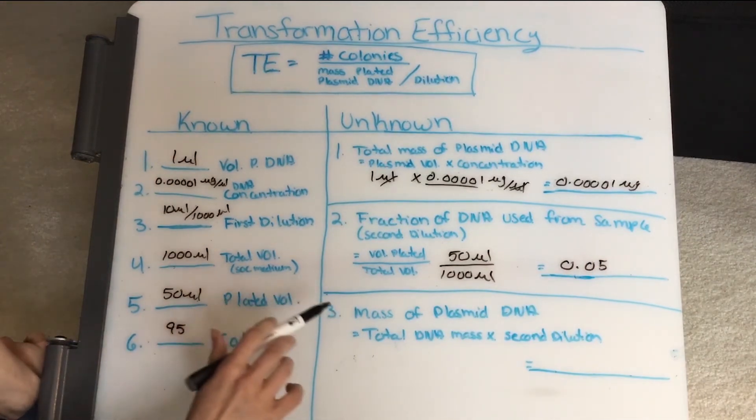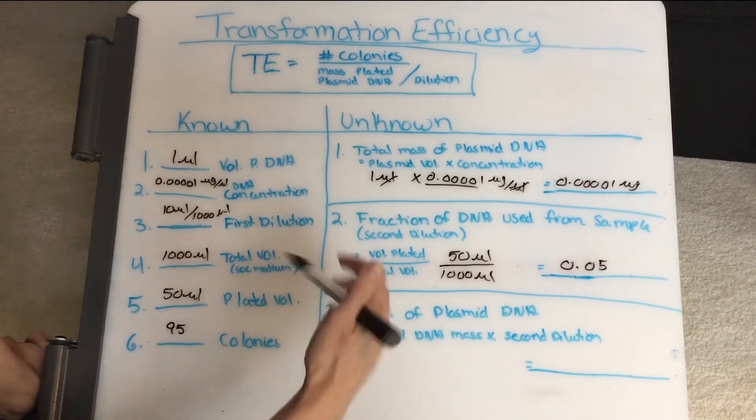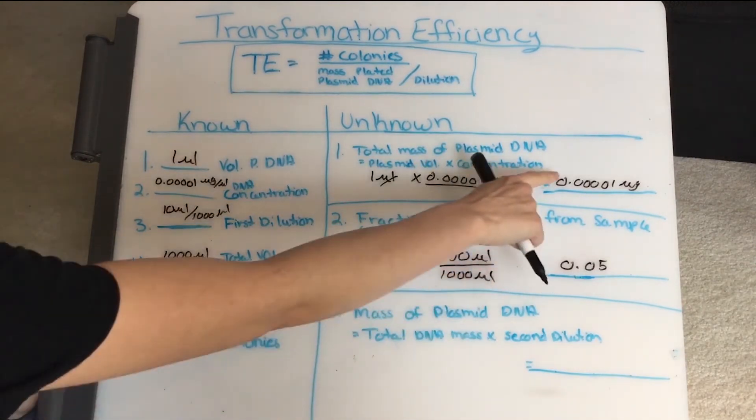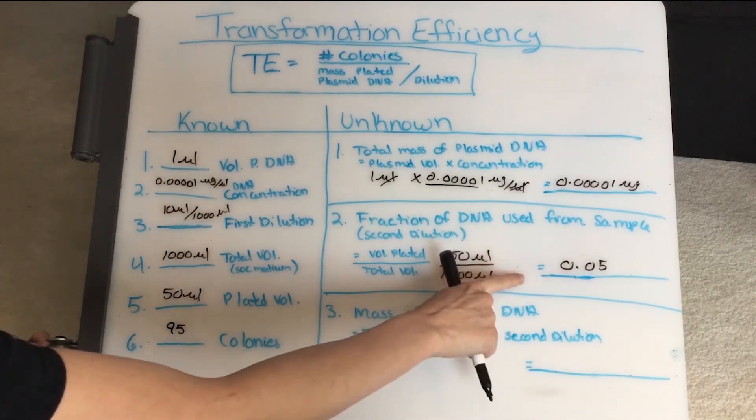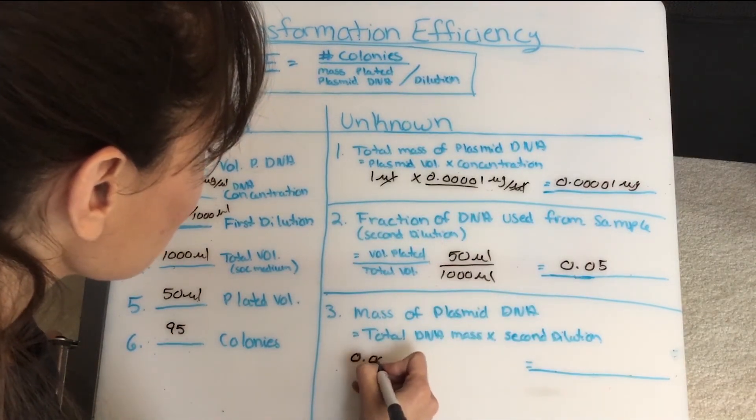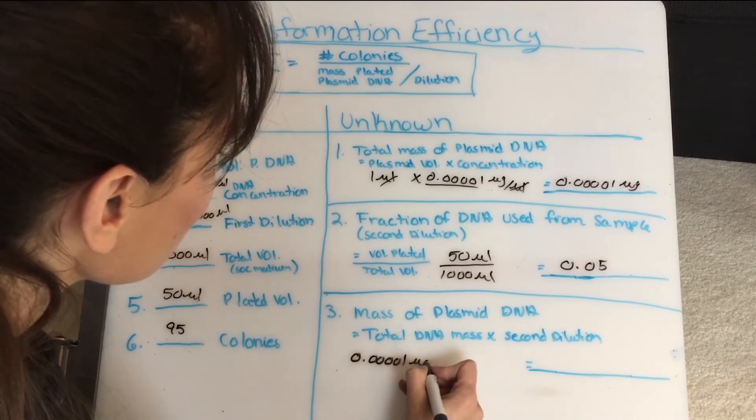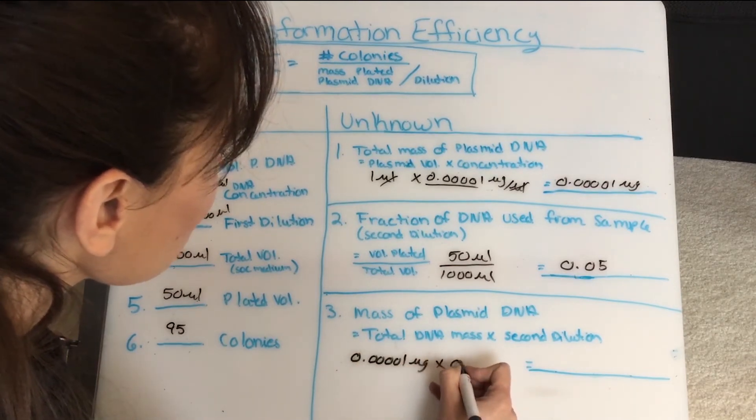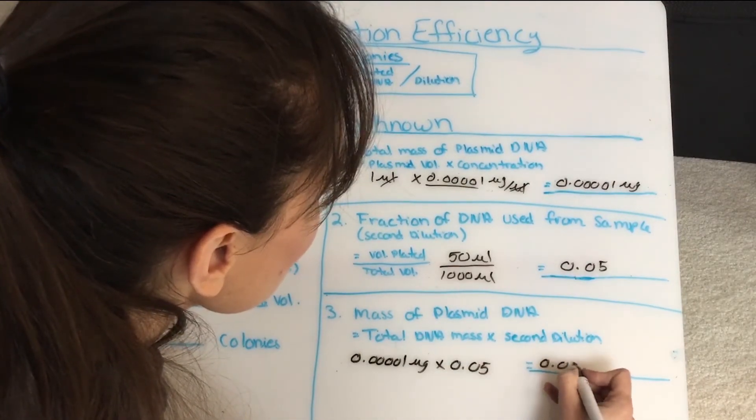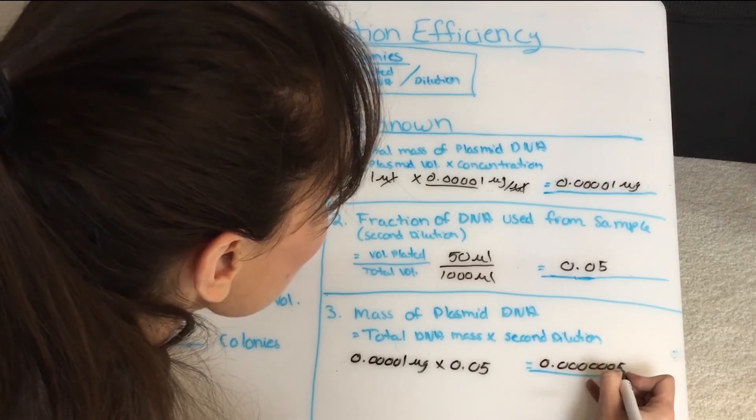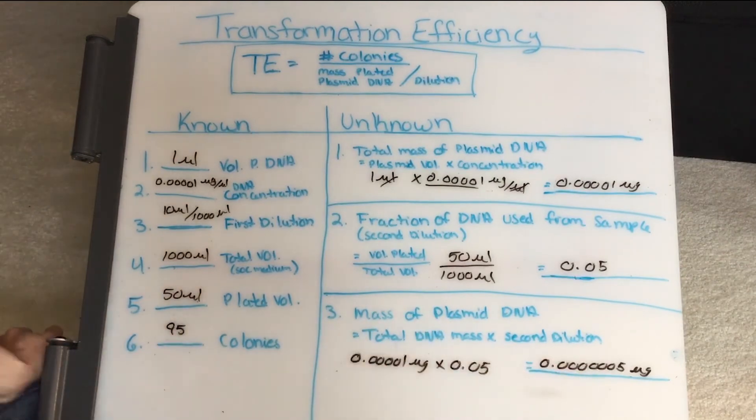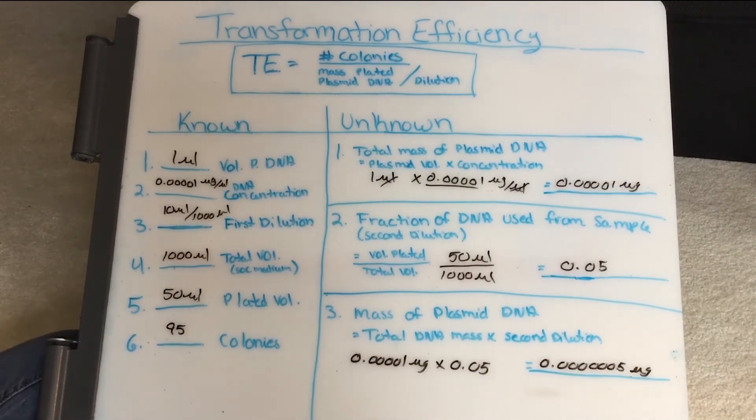And then the last part is the mass of plated plasmid DNA. So I'm going to take the total DNA mass, this part, and I'm going to multiply that by my second dilution, this part, and I'll have my number. So 0.00001 microgram times 0.05, and that gives me 0.0000005 micrograms. So this is the amount that was actually plated, 0.0000005. So now I'm ready to use my formula here.